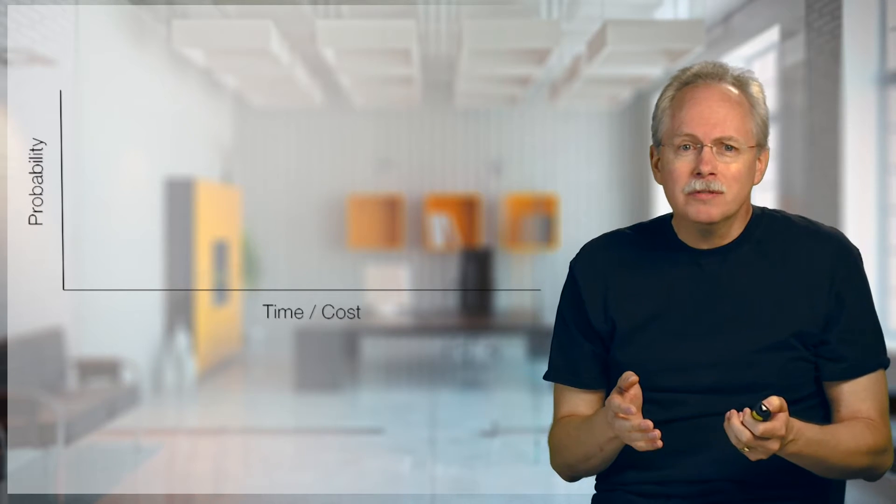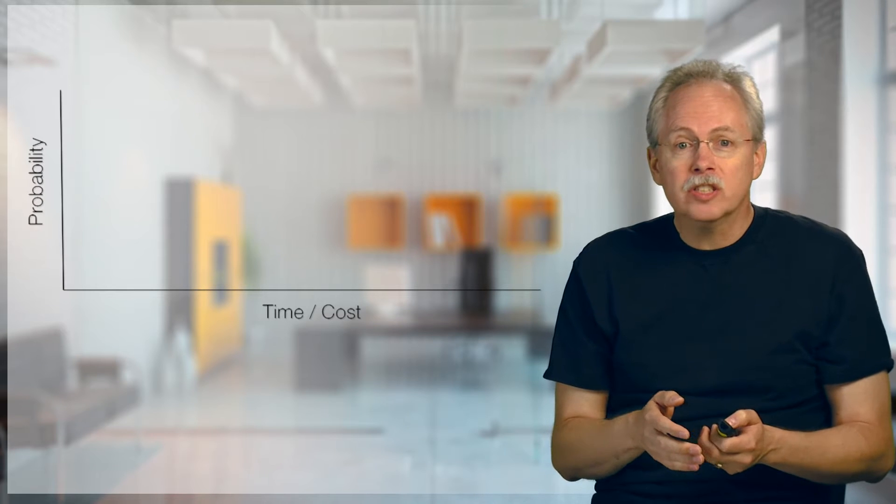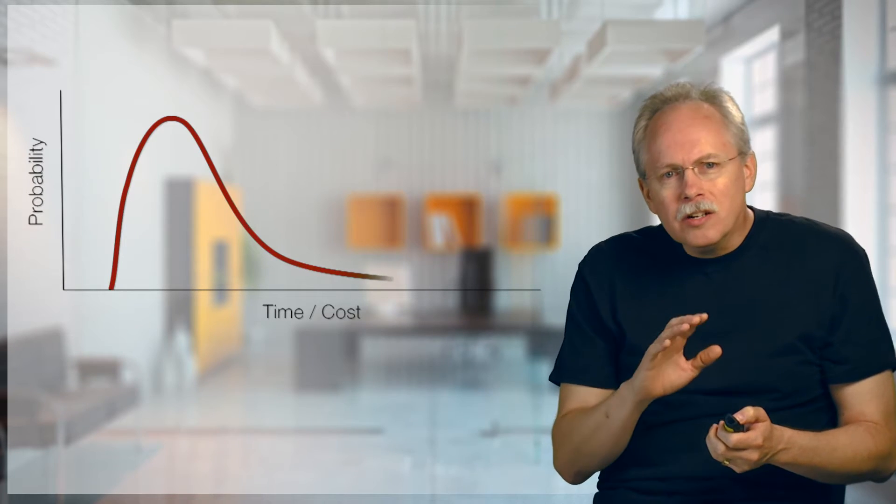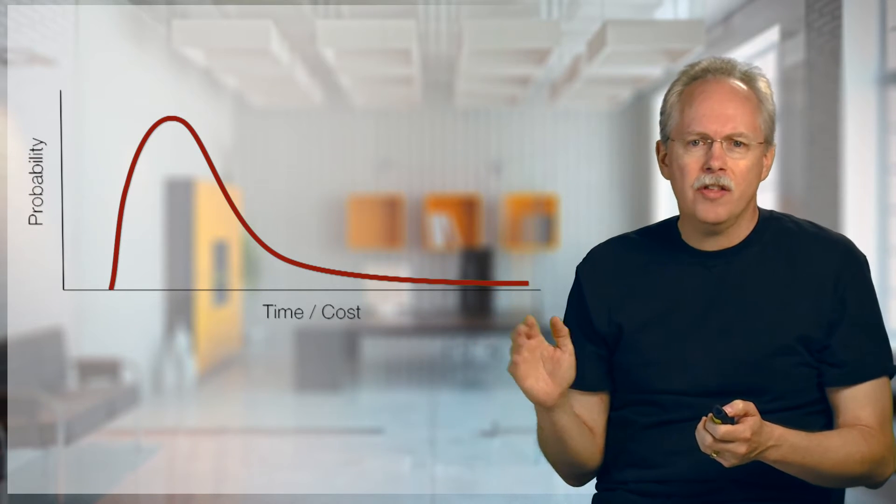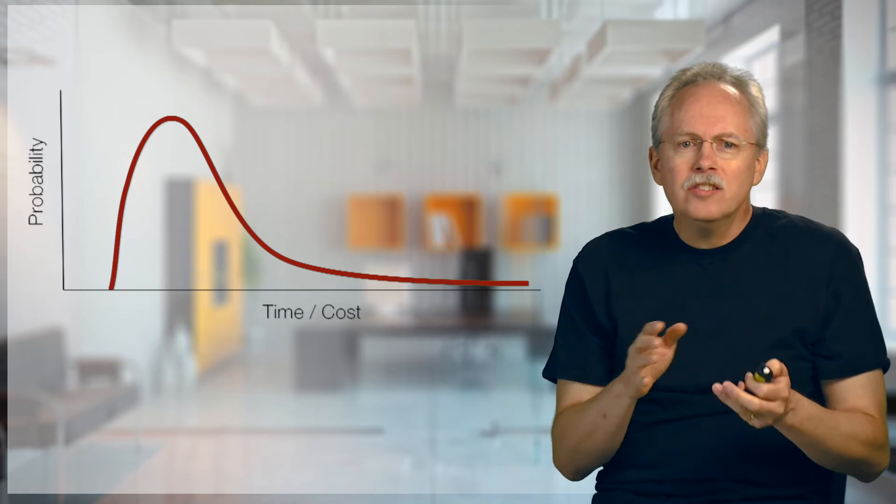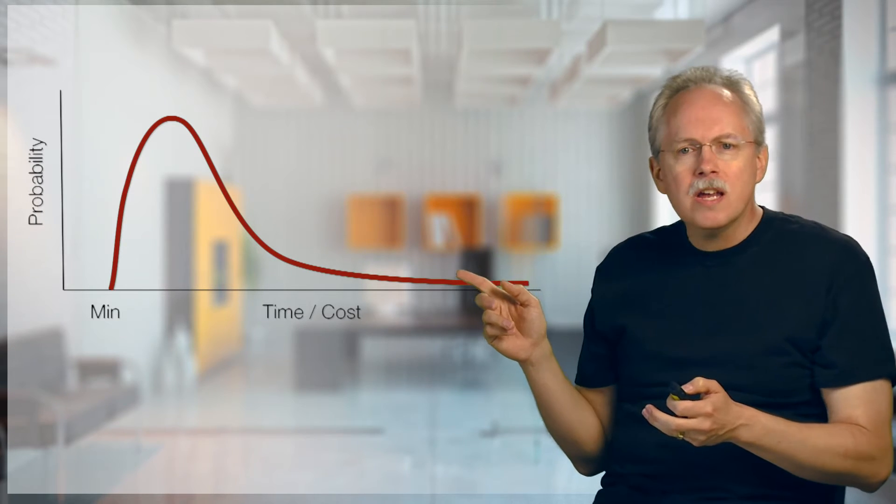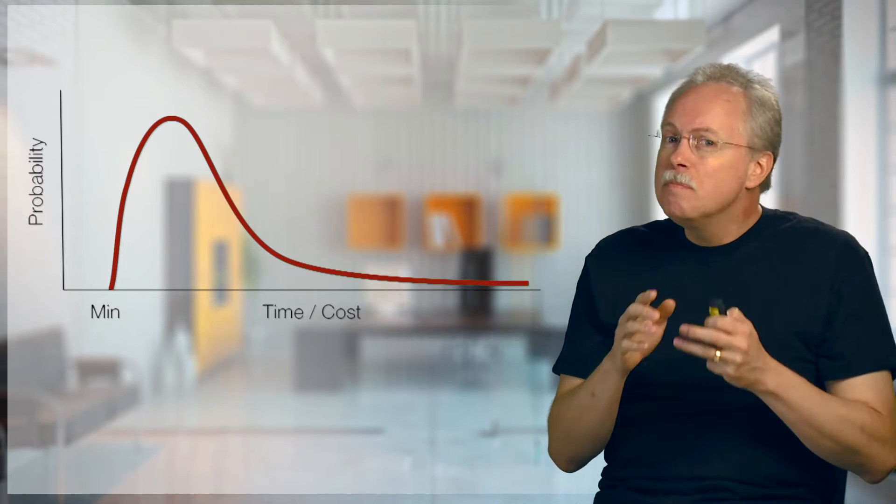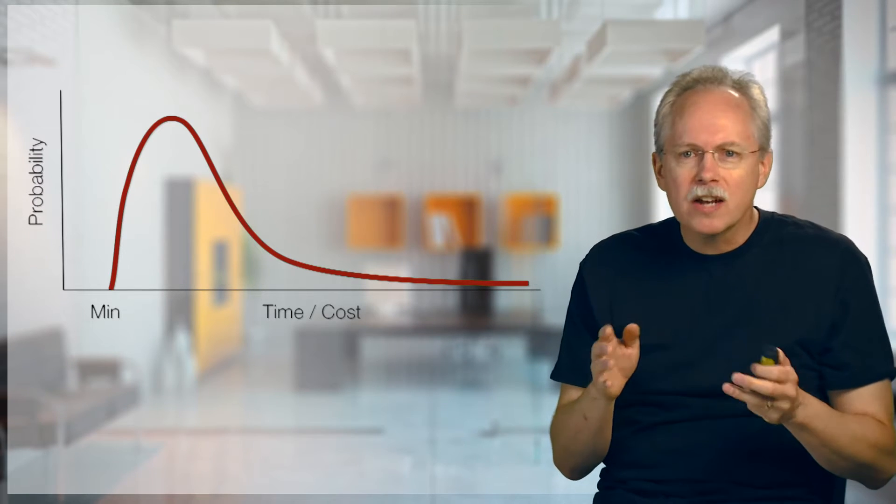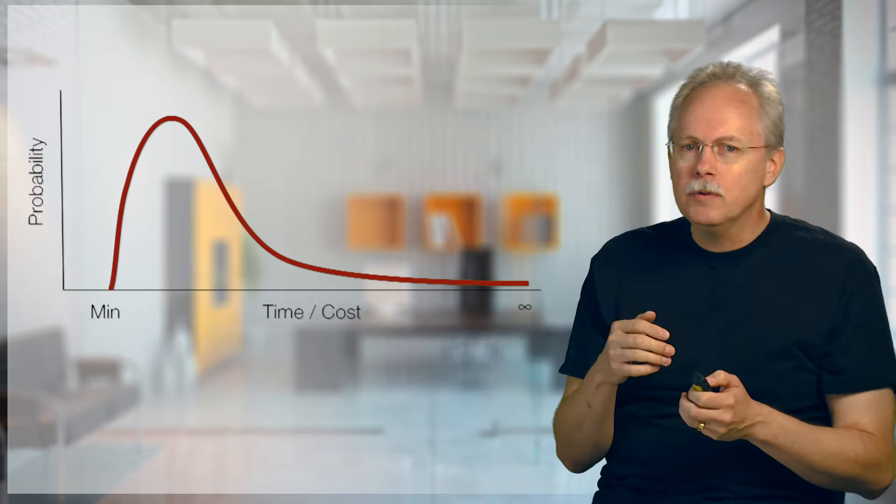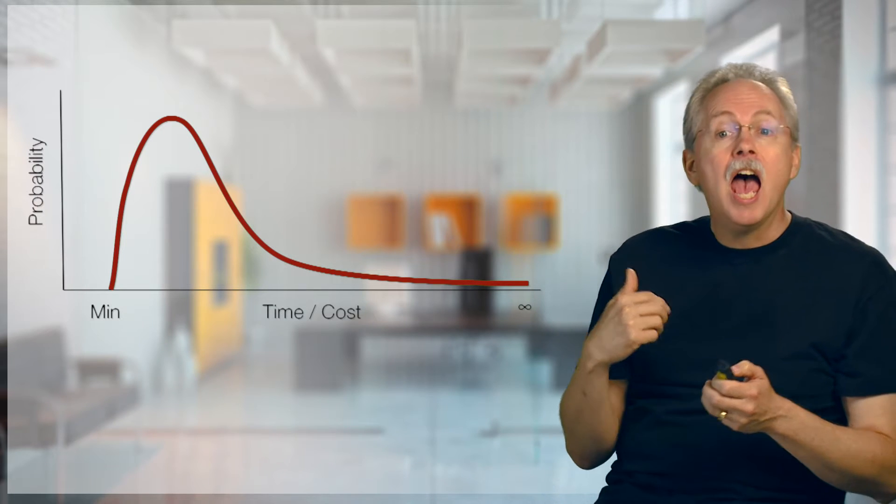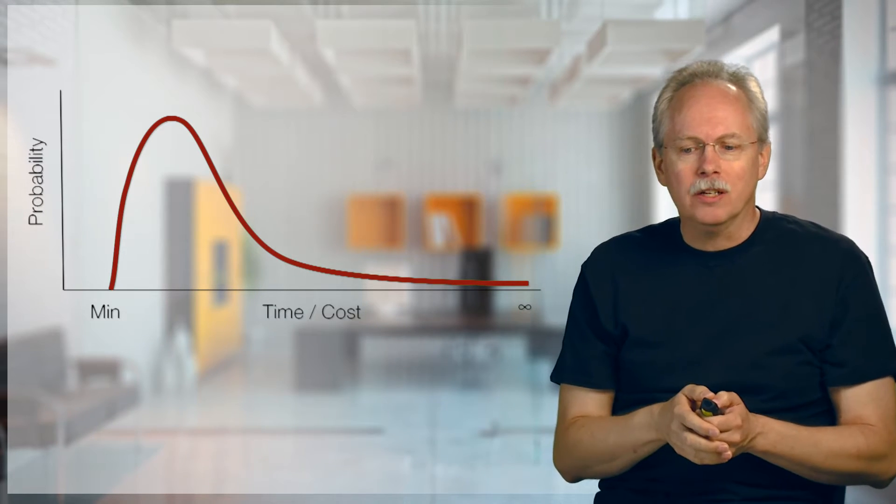An estimate is really a probability distribution function that looks something like this, where it starts slow, then it has this long tail that goes on. If you look at it, you can see that it has a minimum point. There's a point here which we're not ever going to be faster than or cheaper than. And it could go out to infinity and beyond. That's what an estimate is.